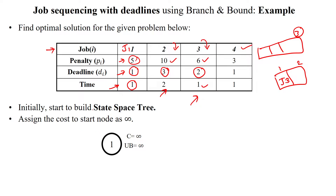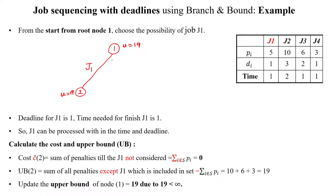By building the state space tree we can solve job sequencing with deadlines. Initially we make the root node, with cost and upper bound both set to infinity since they are unknown. After that, we go to select job number 1, and we check what the upper bound and cost will be.